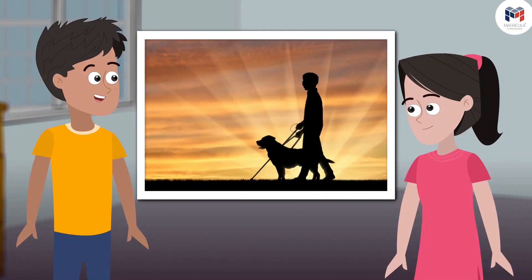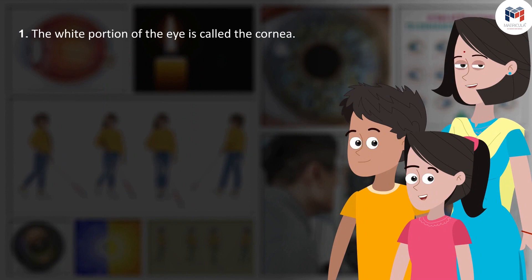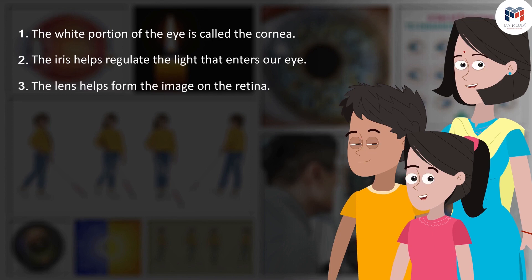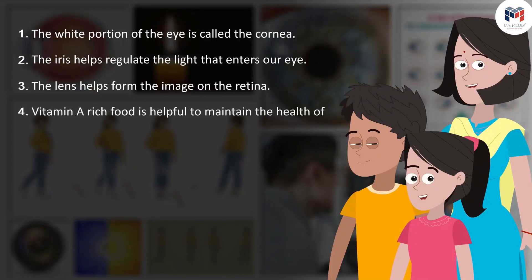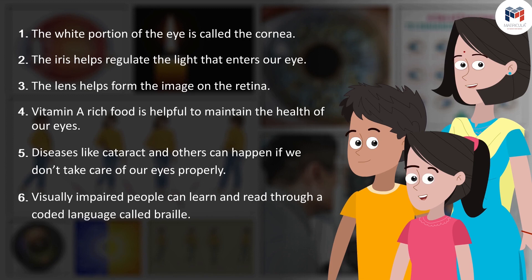But first, we should eat some carrots that mum had brought for us. The concepts we learnt in this chapter: the white portion of the eye is called the cornea; the iris helps regulate the light that enters our eye; the lens helps form the image on the retina; vitamin A rich food is helpful to maintain the health of our eyes; diseases like cataract and others can happen if we don't take care of our eyes properly; visually impaired people can learn and read through a coded language called braille.